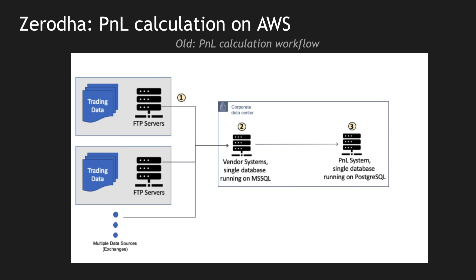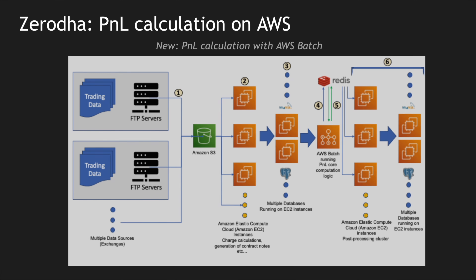After moving to AWS, Zerodha wanted a solution that could scale and perform parallel execution, processing data from different systems in parallel — both pre-processing and post-processing — with less IO-intensive operations. That's when they decided to go with AWS Batch. In the new architecture, files come in from the exchanges, pulled via secure FTP protocol and pushed into S3 buckets. Once files are in S3, a fleet of EC2 instances takes those files and performs calculations based on contracts and business-specific logic.